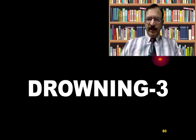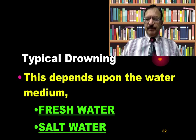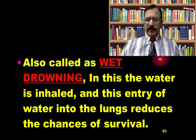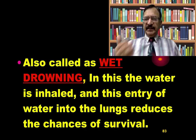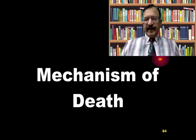Starting with typical drowning — typical drowning depends upon the water medium, that is either fresh water or salt water. This is called wet drowning because water is inhaled and aspirated in, and this entry of water into the lungs reduces the chances of survival. Now, what happens in typical or wet drowning regarding the mechanism of death?